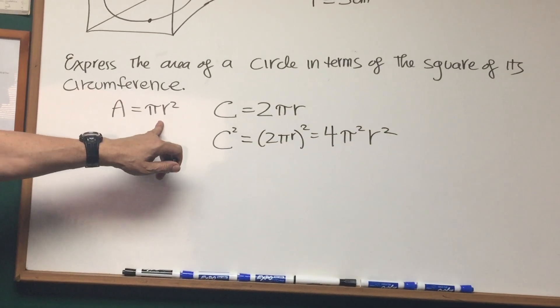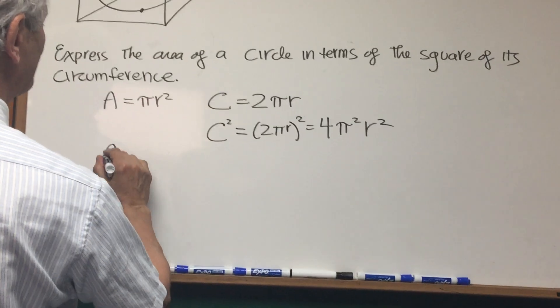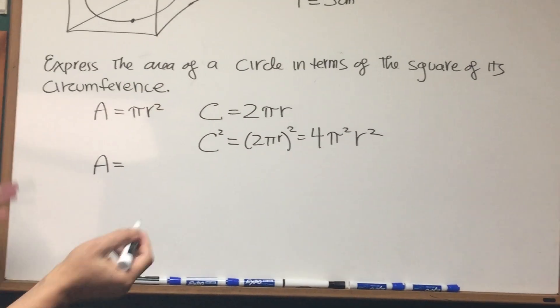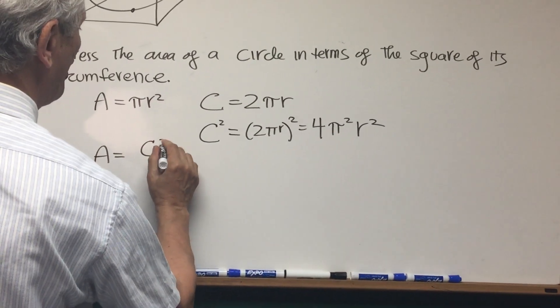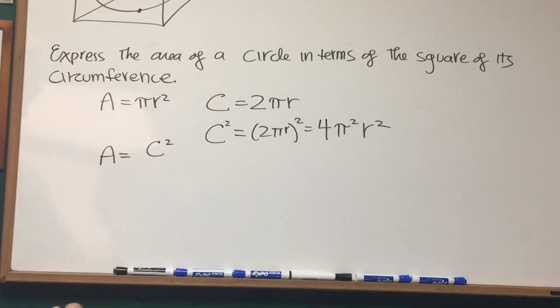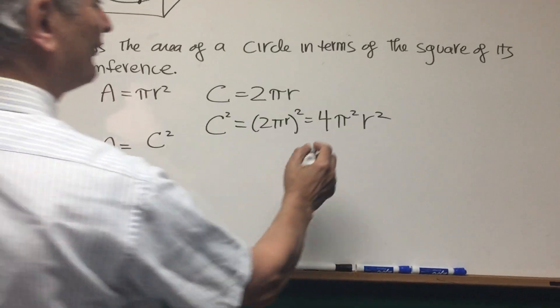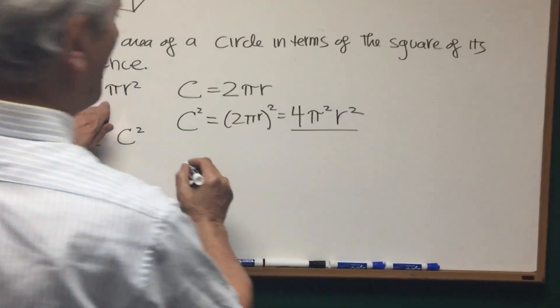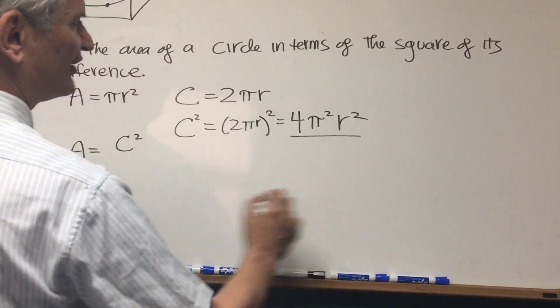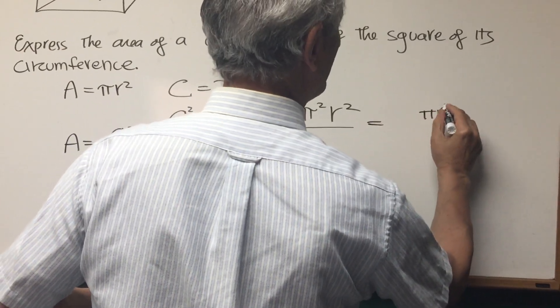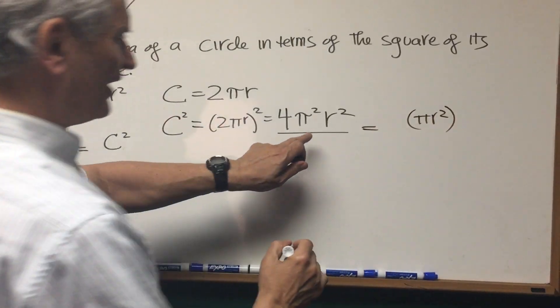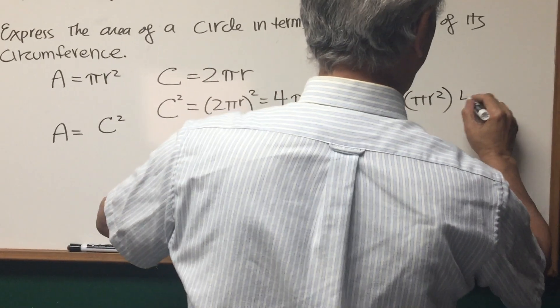Okay, so moving that over here, how can we represent that in terms of the circumference squared? Well, if I write the circumference squared, this is equal to 4 pi squared r squared. I'm going to have to divide that by what? I want pi r squared. Let's write this as pi r squared. What do we have left over? We have a 4 and a pi.